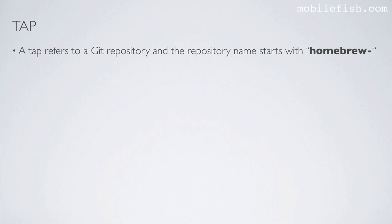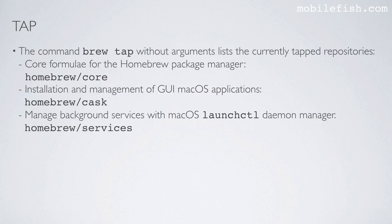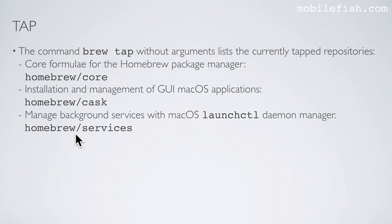I will now explain the term tap. A tap refers to a git repository, and the repository name starts with homebrew-. By default, Homebrew uses the following git repositories — these three. The command brew tap, without arguments, lists the current tap repositories. You will see a tap repository referring to the core formulae, one referring to installation and management of GUI macOS applications, and one referring to managing background services with the macOS launchctl daemon manager.